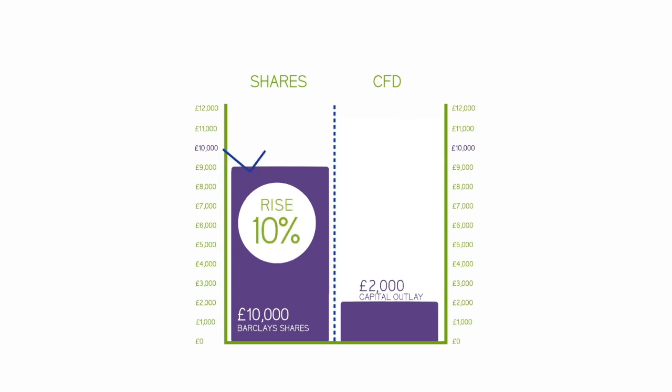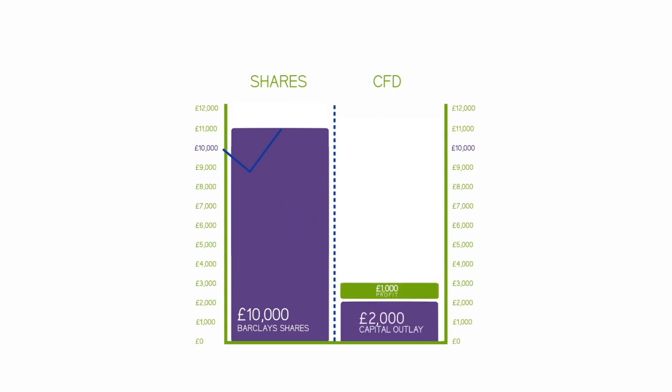Conversely, let's assume the shares rise 10%. This means that you make a profit of £1,000 from an initial investment of £2,000. So on closing the trade out for a profit, you'll have your initial investment of £2,000 plus your profit of £1,000.